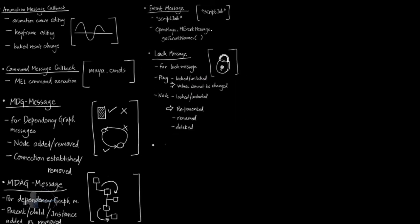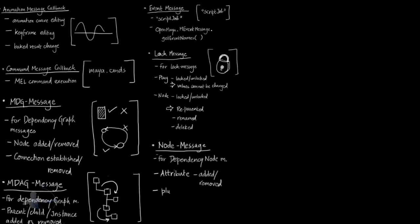The next type of callback is MNodeMessage. These callbacks are for handling dependency node messages. These messages are generated when an attribute is added or removed, a plug of a node is set dirty, or the name of a node is changed.